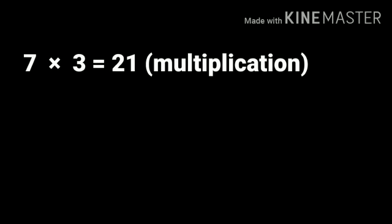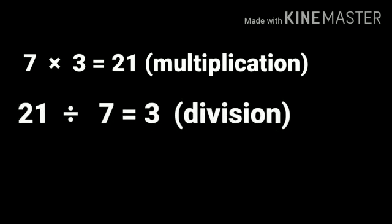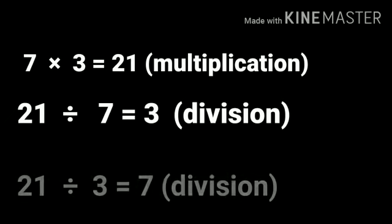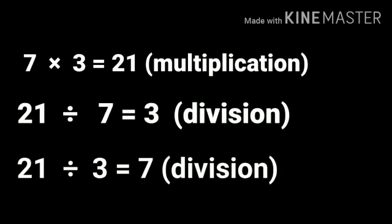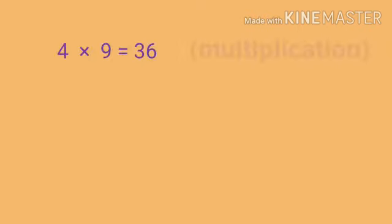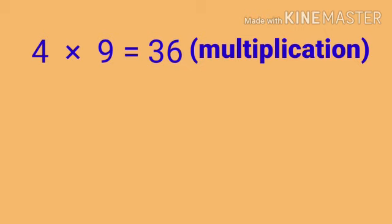7 into 3 gives 21. This is multiplication. But when we divide 21 with 7 we get 3 as answer. So that is division. Again 21 divided with 3 will give you 7. So let's see another example.